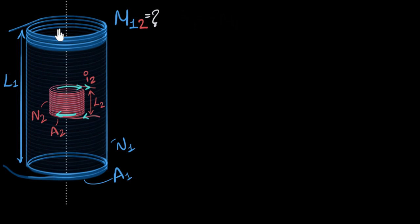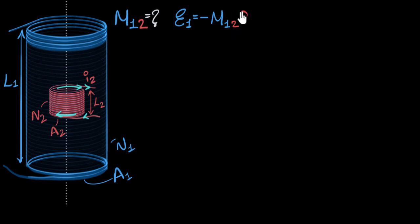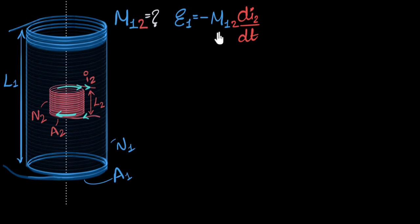Quick recap of mutual induction: the EMF induced in the larger coil E1 can be written as negative mutual inductance of the larger coil with respect to the smaller coil, times the rate of change of current in the smaller coil. If you are not familiar with this equation, feel free to go back and check out our previous videos on mutual induction.